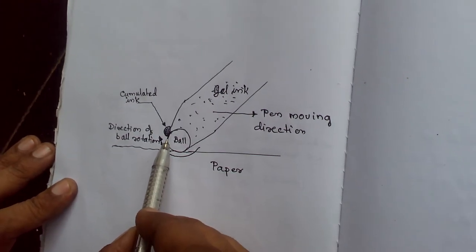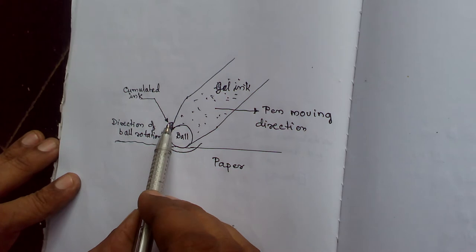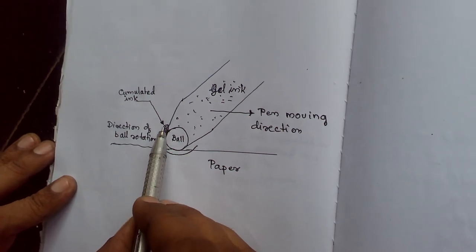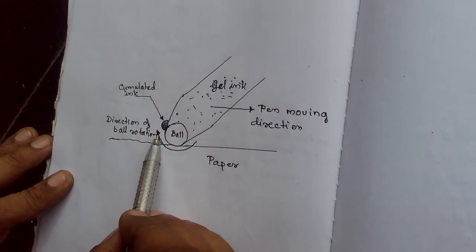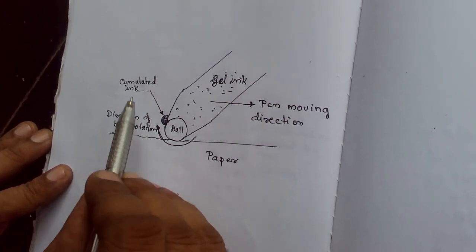So from the surface of the ball, the ink will be accumulated here and this will create the big dots. When the accumulated ink becomes larger and larger, the dots also will be bigger.